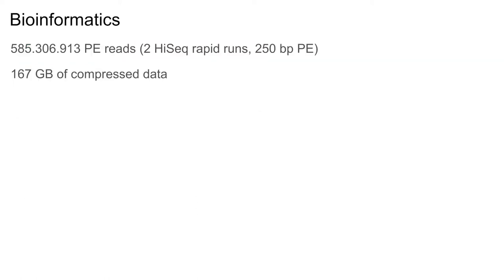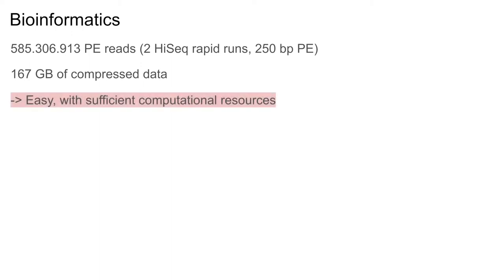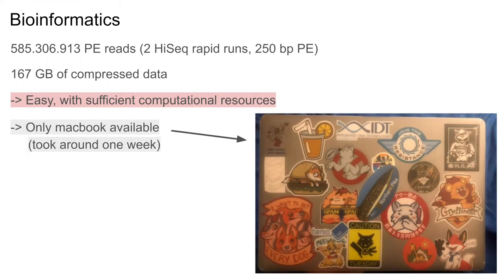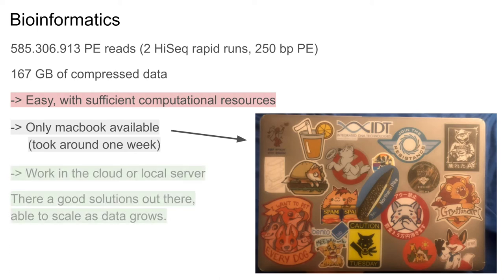Now that the sequencing worked, we ended up with quite a lot of sequences that had to be processed. Usually there's not too much of an issue if you have enough computational resources. However, I only had a MacBook available for data analysis, which means analyzing the data can take a week or so. To get around that bottleneck, it's really important to work in a cloud or some server-based solution. This way there's enough computational power and things are scalable as the metabarcoding data grows with time.